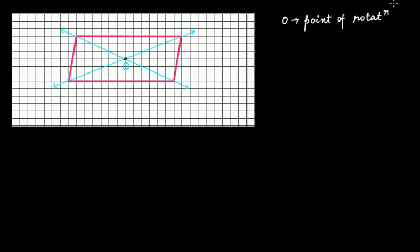About this point O we will rotate this parallelogram. Before rotating, I want to show one more thing: I have highlighted one side of this parallelogram and another side, so that when it rotates you can understand which side has moved to which place. Now I'm going to rotate it by 180 degrees around this point.